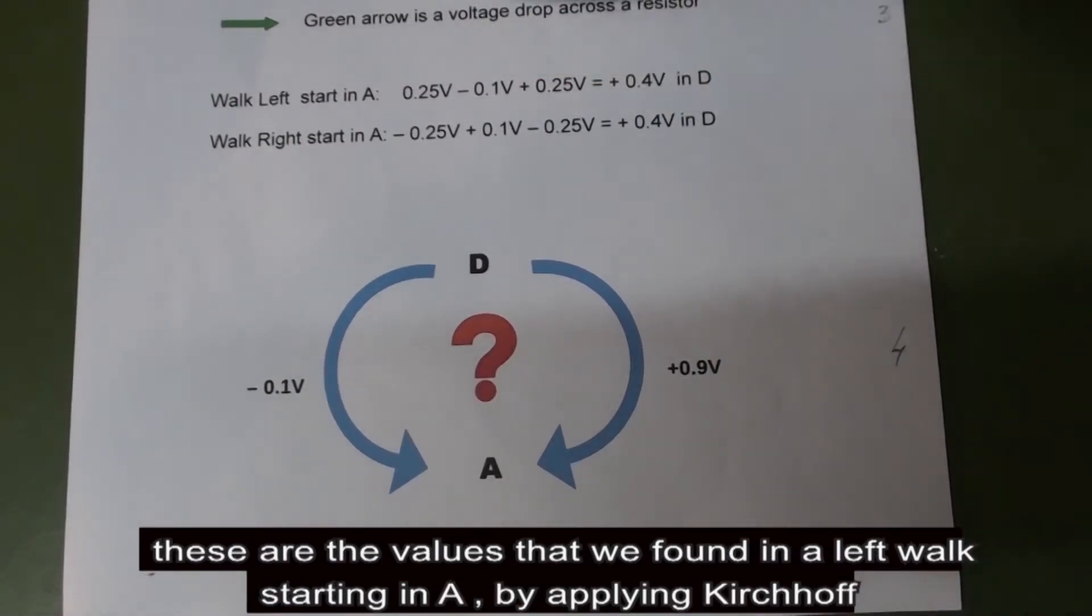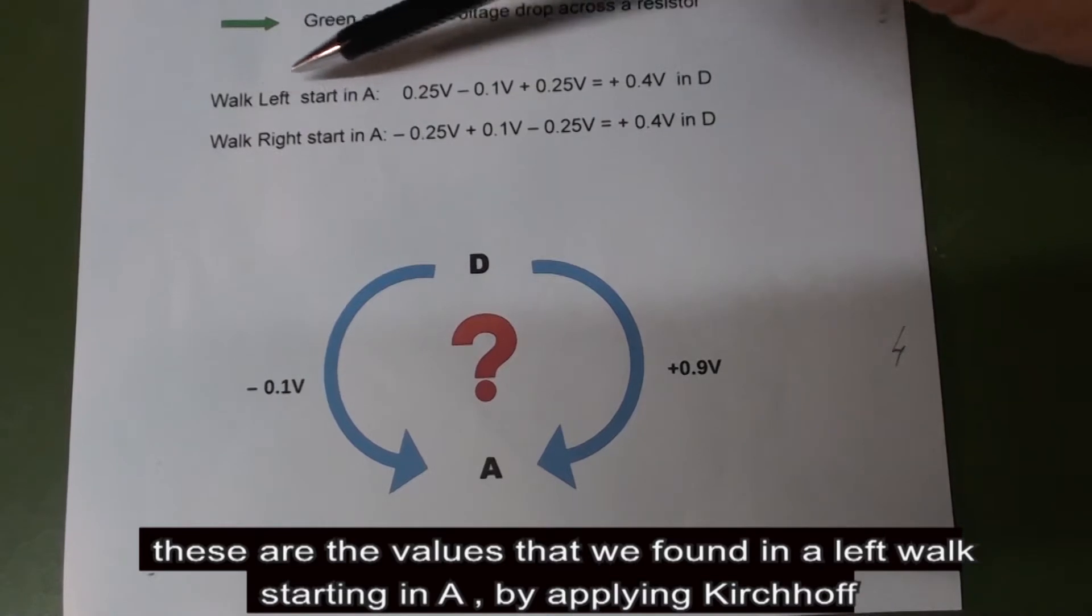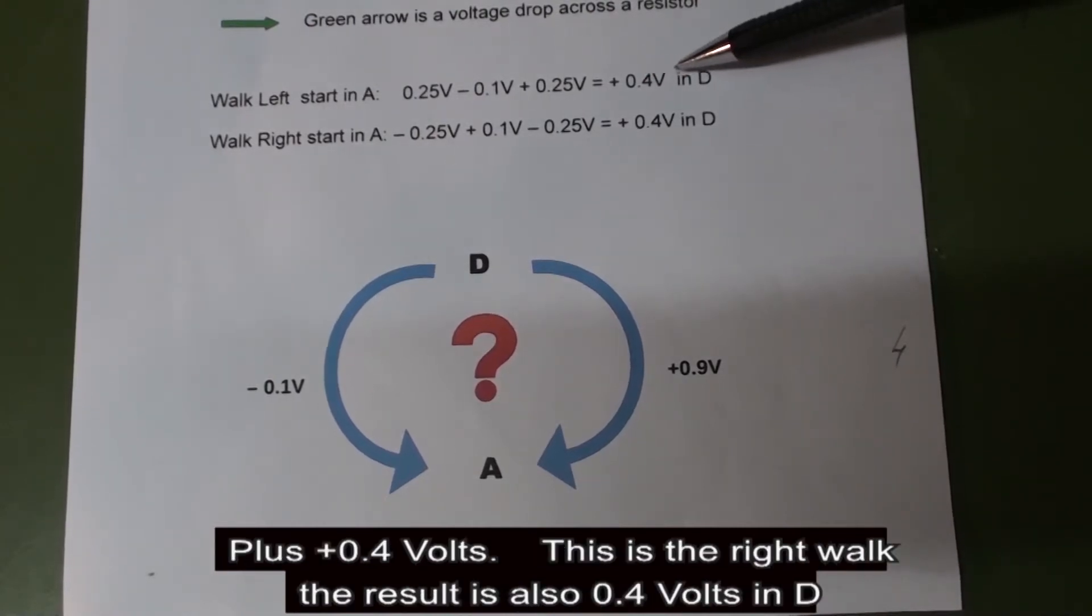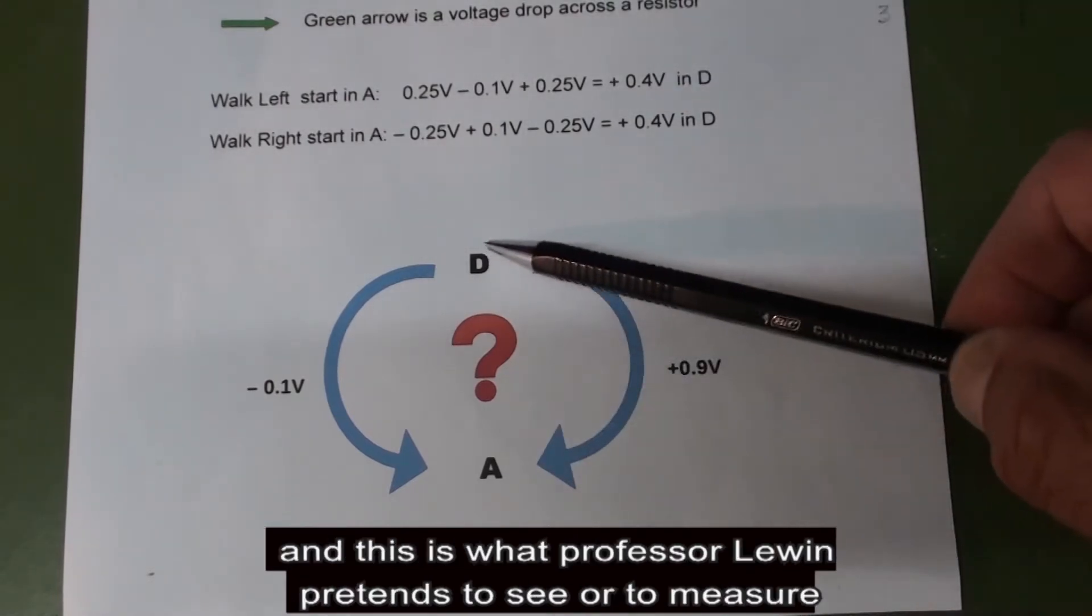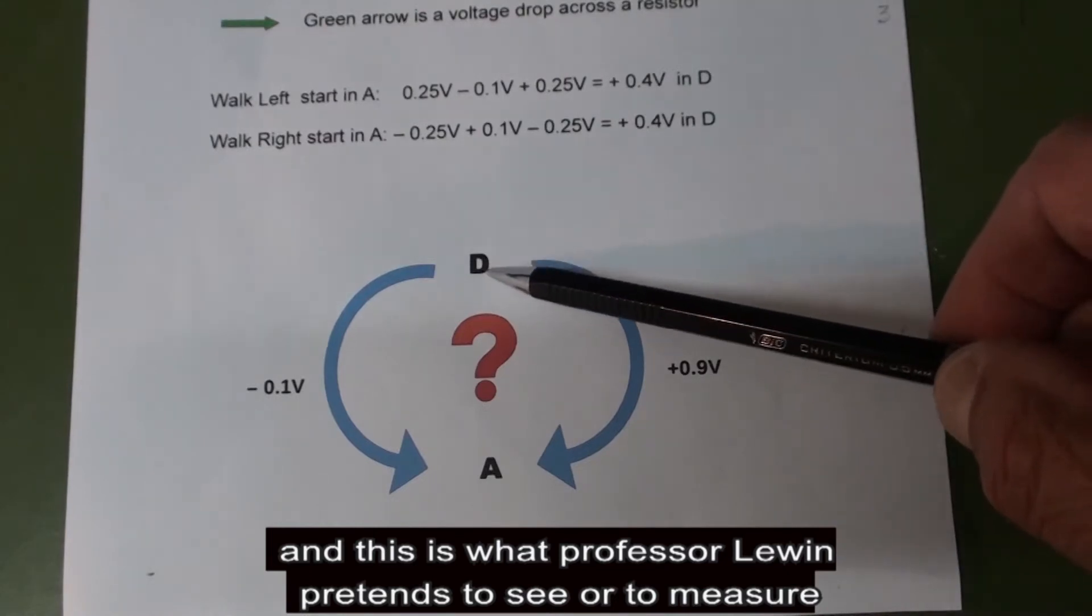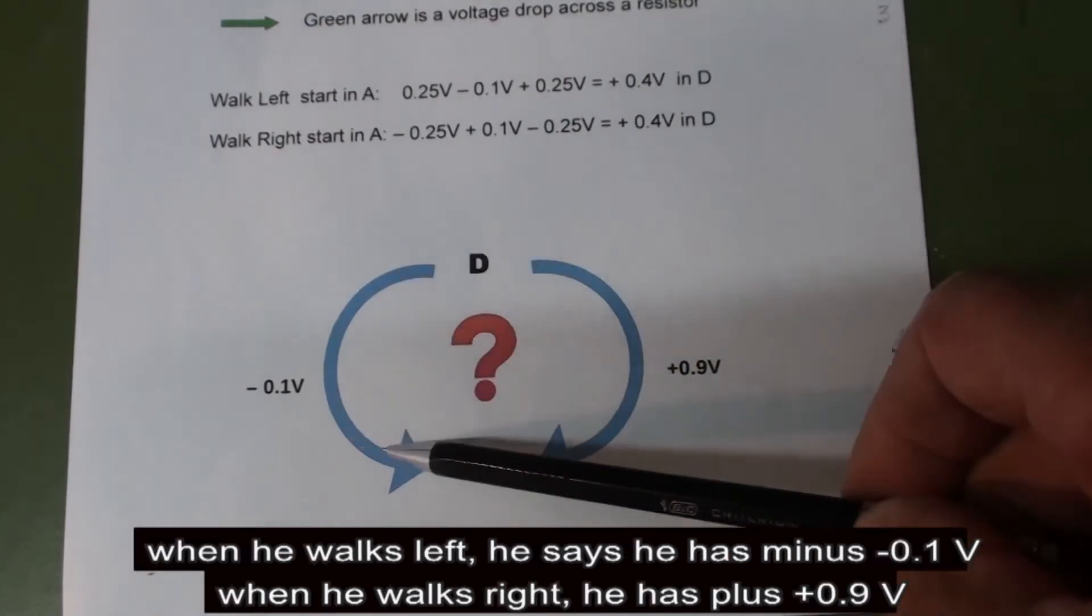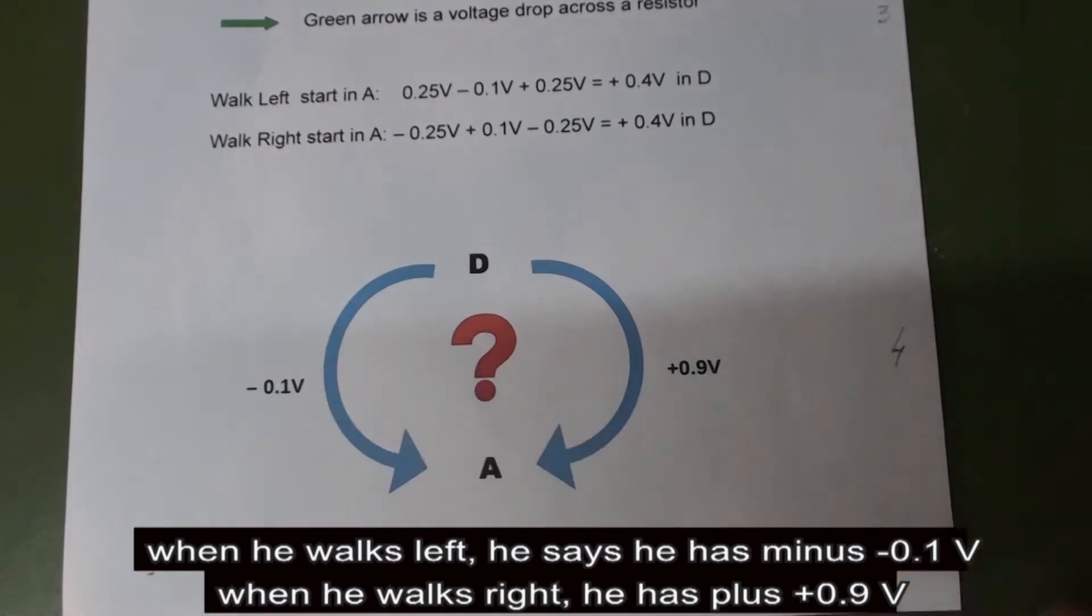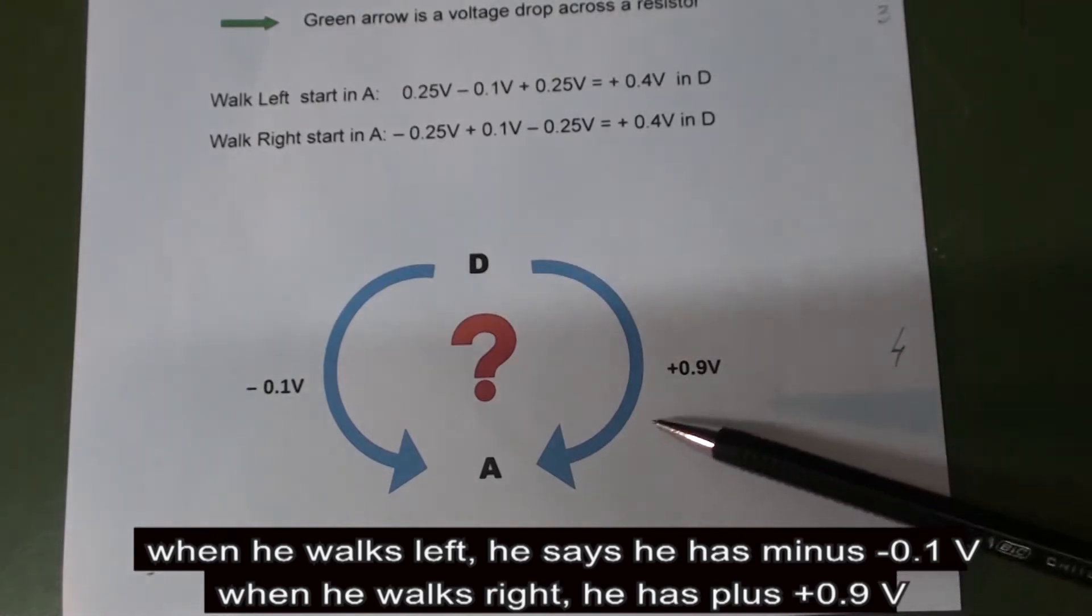These are the values that we found in a left walk starting in E by applying Kirchhoff: plus 0.4 volts. This is the right walk, the result is also plus 0.4 volts in D. And this is what Professor Lewin pretends to see or to measure. When we walk left, he says he has minus 0.1 volts. When he walks right, 0.9 volts plus.